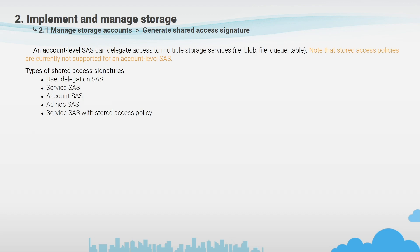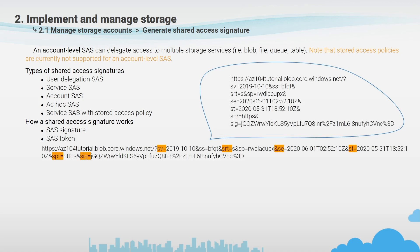The second type is service SAS, secured with the storage account key, which delegates access to a resource in only one of the Azure Storage services: blob storage, queue storage, table storage, or Azure Files — not all at the same time. The last one is account SAS, used to delegate access to all four storage services: blob storage, queue storage, table storage and Azure Files. All these types are signed via URI that points to one or more storage resources and includes an SAS token containing query parameters like validity time, permissions, protocol, IP address, signature, and type of resource.